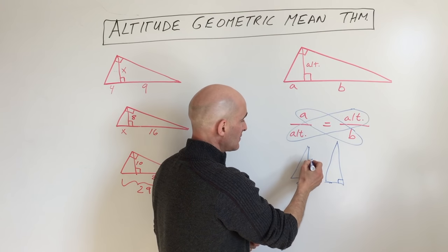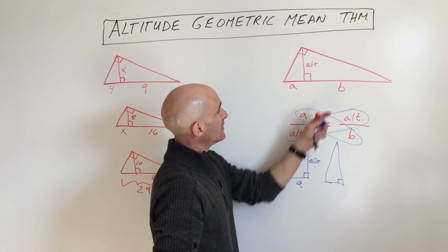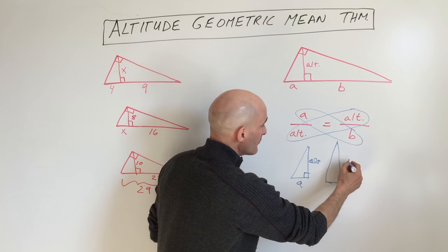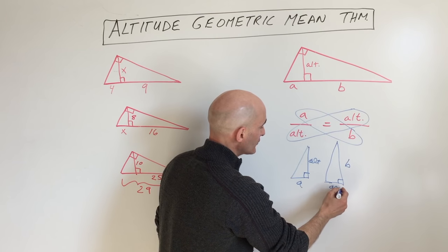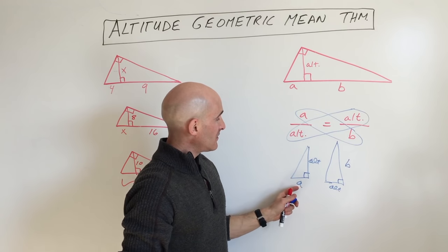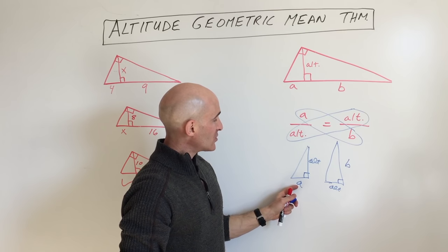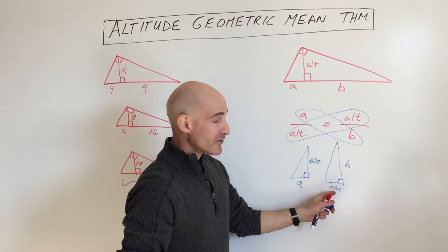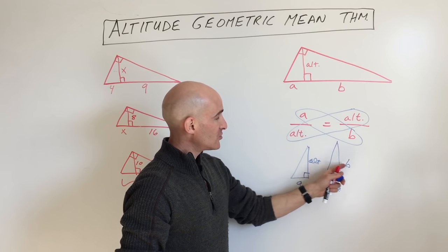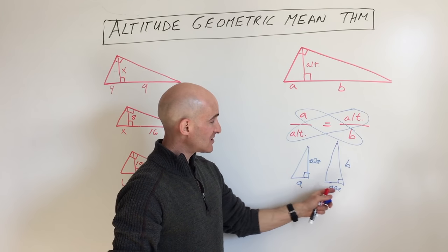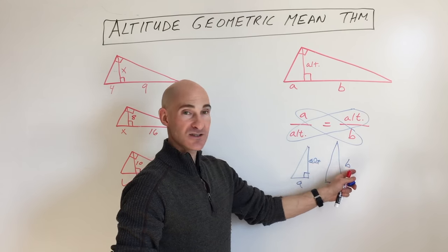Here you've got A and the altitude, here you've got B and the altitude, and you can see you can set up a proportion. So A is to the altitude as the altitude is to B. You're comparing the base to the base as the height is to the height.